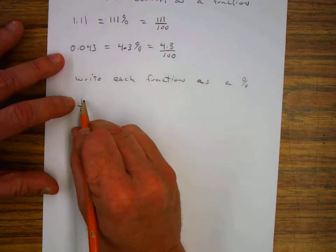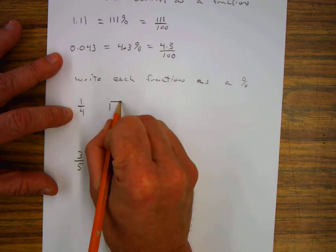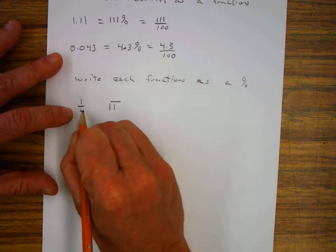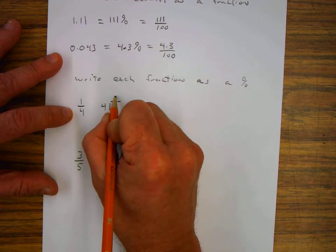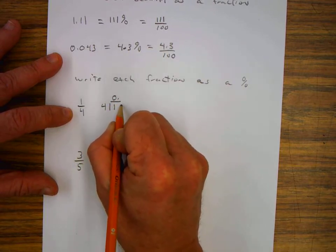So I have 1 over 4, or 1 fourth. So the numerator goes inside. The denominator goes on the outside. I know that 4 does not go into 1, so I put 0. Add a decimal. Add a 0.